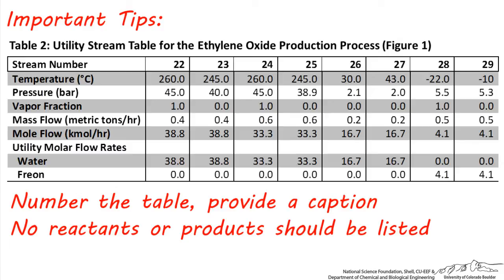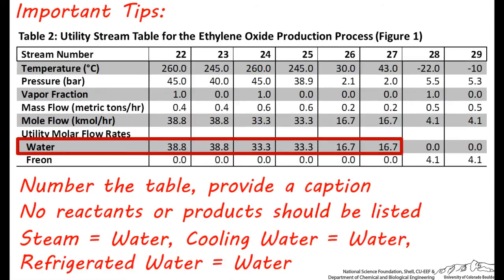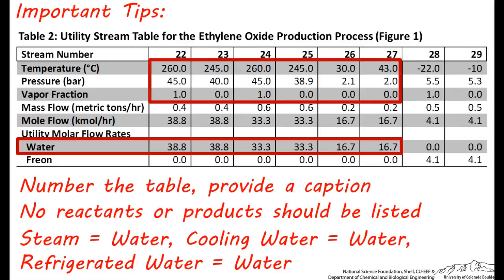This helps make the table much faster and easier to read. Also, notice that steam, cooling water, and refrigerated water are all listed as water. Any kind of steam, such as the high-pressure steam used in streams 22 through 25, is listed as water. And cooling water, which is used in streams 26 and 27, is listed as water as well. If we had refrigerated water in this process, we would also list it as water. Do not list these as steam, cooling water, or refrigerated water in the table. If you're wondering how somebody would be able to tell if you're using high, medium, or low-pressure steam, or cooling water, or refrigerated water as the utility — this is determined by looking at the temperature, pressure, and vapor fraction of the water. We can deduce the type of utility being used through these physical properties.